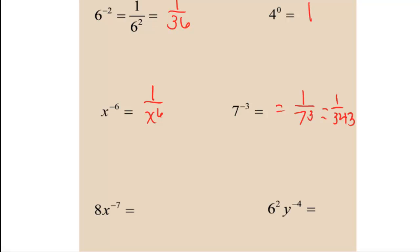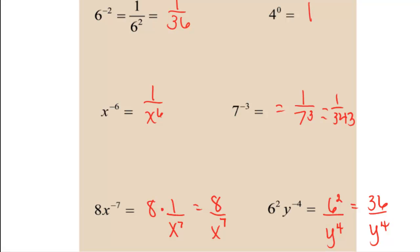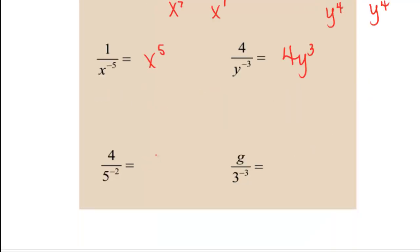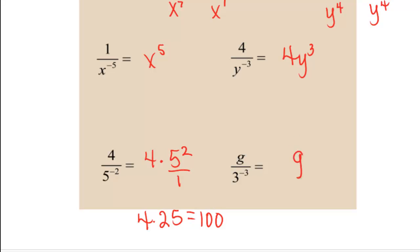8x to the negative seventh is the same as 8 times 1 over x to the positive seventh, which is 8 over x to the seventh. 6 squared times y to the negative fourth is the same as 6 squared over y to the positive fourth, which is 36 over y to the fourth. 1 over x to the negative 5th is the same as x to the fifth. 4 over y to the negative third is the same as 4y to the third. 4 over 5 to the negative second is the same as 4 times 5 squared over 1, or 4 times 25, which is 100. g over 3 to the negative third is the same as g times 3 to the third over 1, which is 27g.